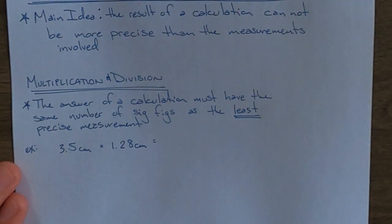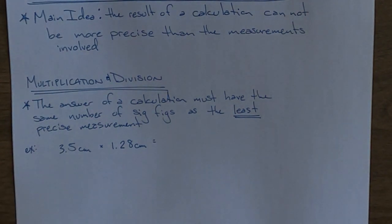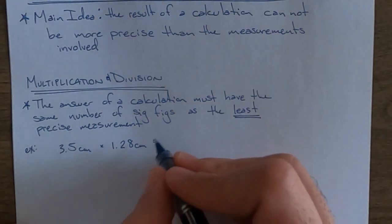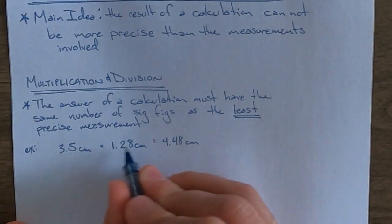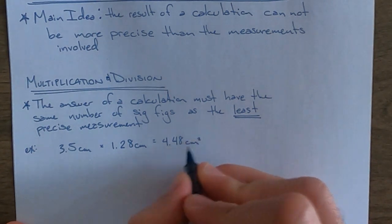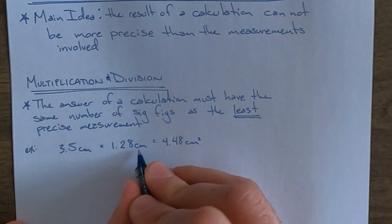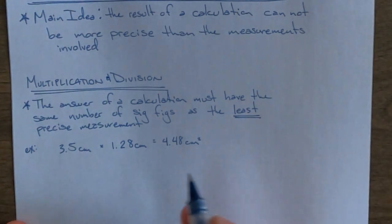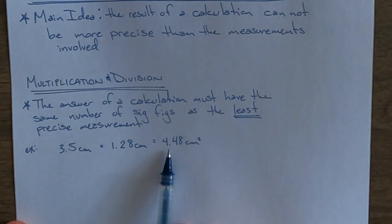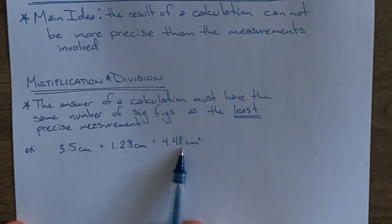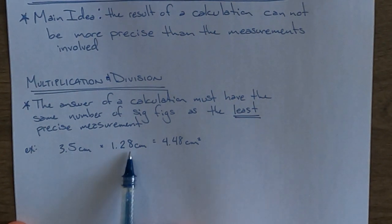This is easy enough to do on a calculator: 3.5 times 1.28, and you get an answer of 4.48. The units, because it's multiplication, would be centimeters squared, centimeters times centimeters. We look and it says that our answer, which right now has three significant figures, needs to be rounded.